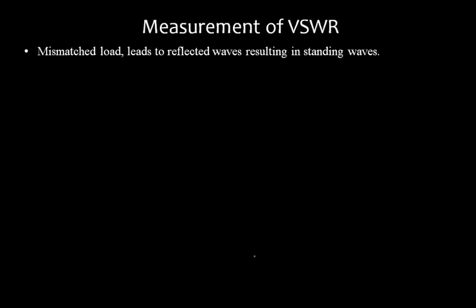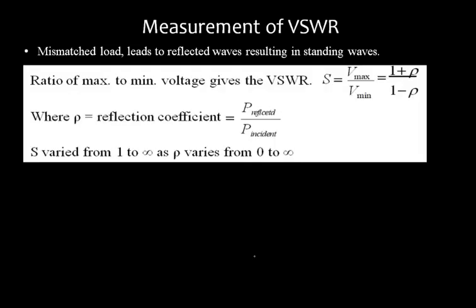We will talk about the measurement of voltage standing wave ratio. When it comes to the voltage standing wave ratio, we must understand what is meant by voltage standing waves. Whenever you terminate your circuit with a mismatched load, reflections will occur, and those reflections will lead to standing waves that form inside the transmission line. The ratio of these standing waves is called the voltage standing wave ratio.